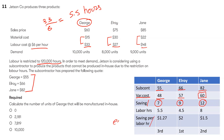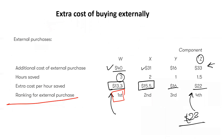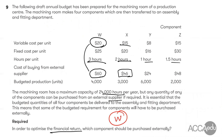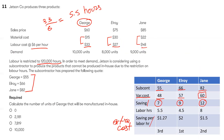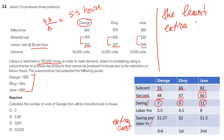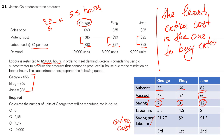We can look at this as either extra cost or saving per labor hour. The question asks how many of each product should be produced in-house. The least extra cost per hour is the product to buy first externally — we're saving $1.27, $2, and $1.50 if we buy externally. So we should buy George first, then Jane, then Elroy from the subcontractor.